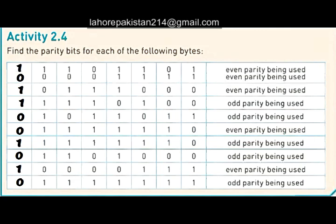Now let's look at the third part, in which we need to make even parity. It has one, two, three ones. To make them even, we add a one as the parity bit in the beginning, making the total number of ones four.